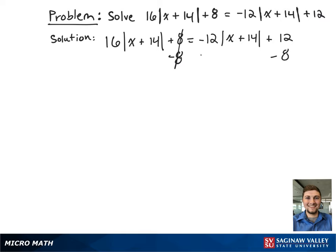We're going to first subtract 8 from both sides to get rid of the single term and add 12 times the absolute value of x plus 14 to both sides to get rid of the absolute value term. This gives 28 times the absolute value of x plus 14 equals 4.